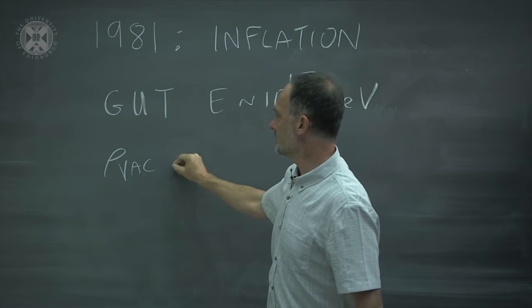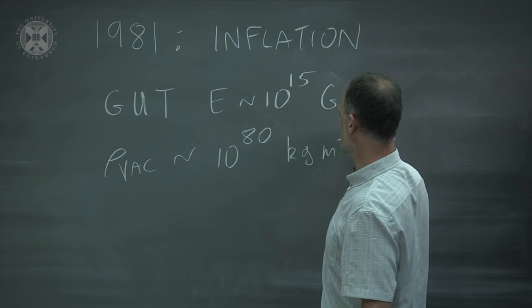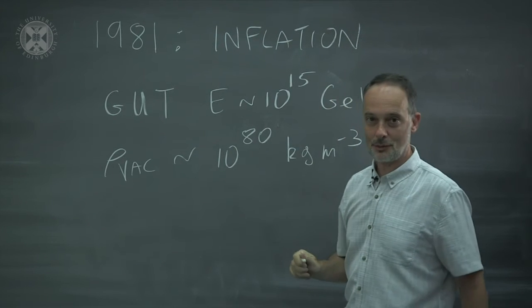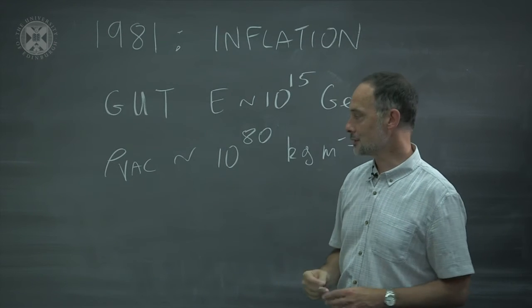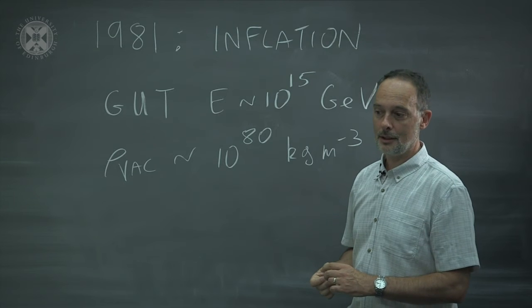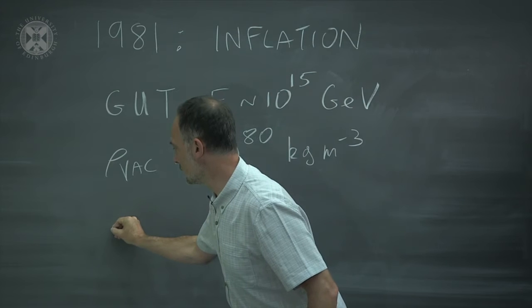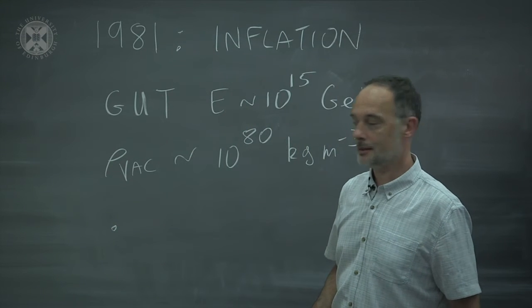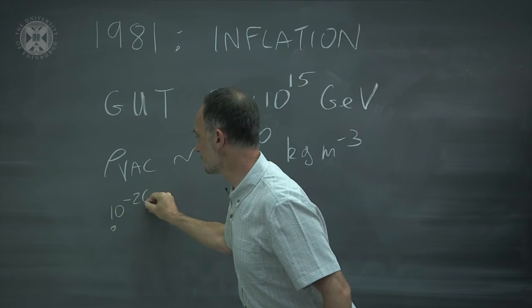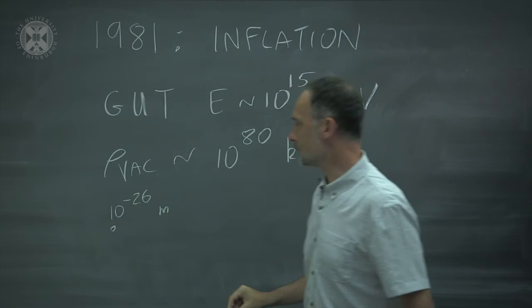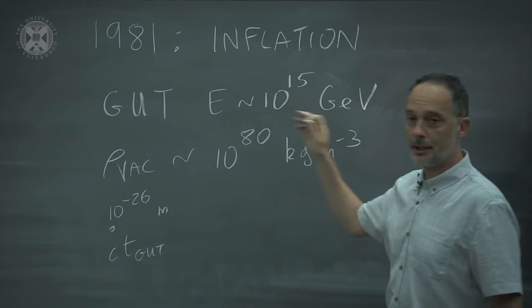If they did, the energy density would be something like 10 to the 80 kilograms per cubic meter, which is over 100 powers of 10 different from the value that we actually measure today. So this is really, really large. And this gave him the very exciting idea that he could take an extremely small piece of space in the universe at this time, it would be only about 10 to the minus 26 meters across. Sub-nuclear, this size is just the speed of light times the time at that particular energy.